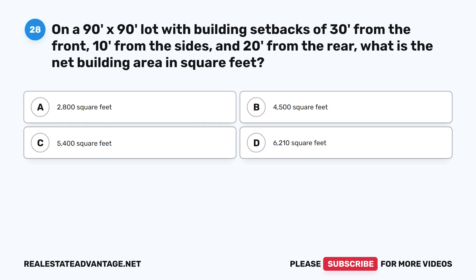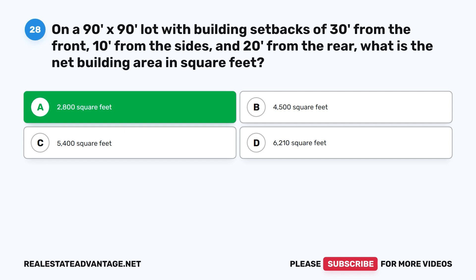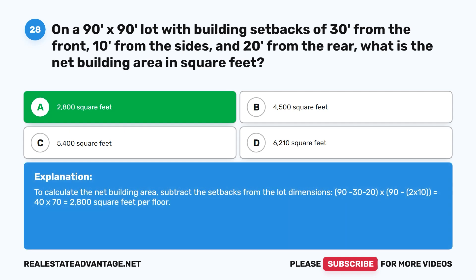Question 28: On a 90-foot by 90-foot lot, with building setbacks of 30 feet from the front, 10 feet from the sides, and 20 feet from the rear, what is the net building area in square feet? A. 2,800 sq ft. B. 4,500 sq ft. C. 5,400 sq ft. D. 6,210 sq ft. The correct answer is A: 2,800 sq ft. Calculation: (90 − 30 − 20) × (90 − 2×10) = 40 × 70 = 2,800 square feet per floor.